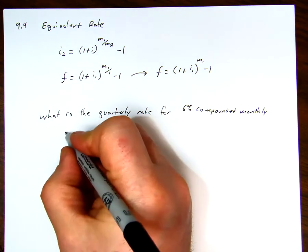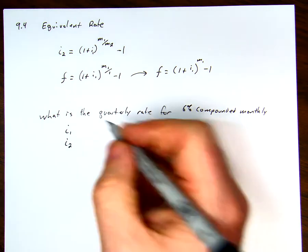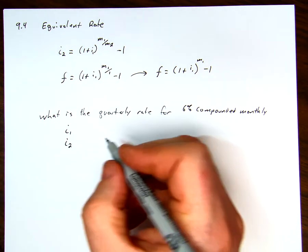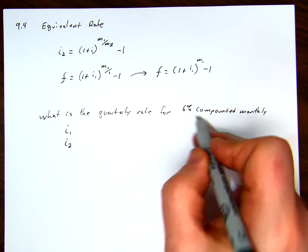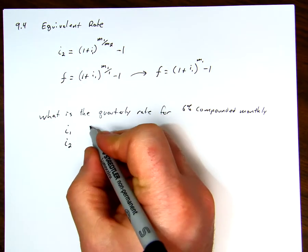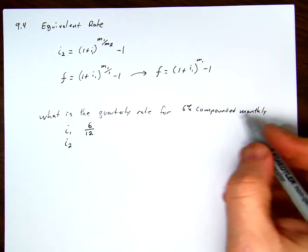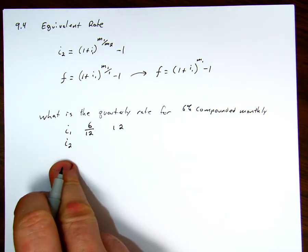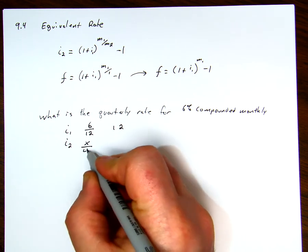We'll set up a little table. We'll say i1 and i2. For i1, we had a rate of, well, we're calculating i. So i1 is the original amount, the one that we're specifying, because i2 is the one we're trying to find. So i1 is the original one, and this is 6% over 12, and our m was 12.